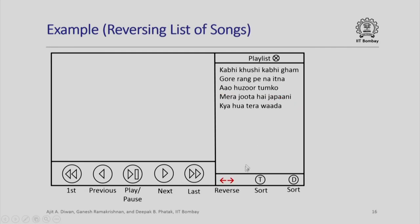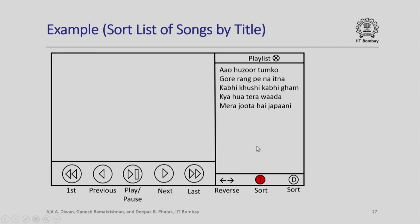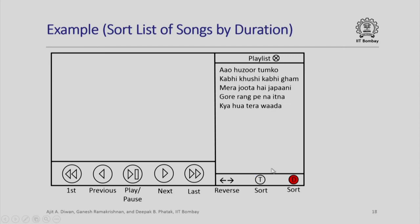I can reverse the list of songs — pressing the reversal button causes all songs to appear in reverse order. I can also sort the list by title: pressing 't' sorts all songs in alphabetical order of their names. Sorting based on duration is also available; although duration is not displayed here, all songs will appear in order of their duration. Note that both sort buttons are toggling — pressing the same button twice sorts in reverse order of names or duration respectively.